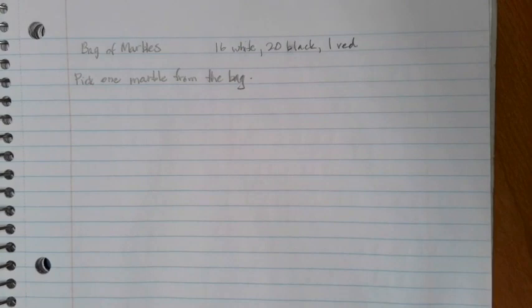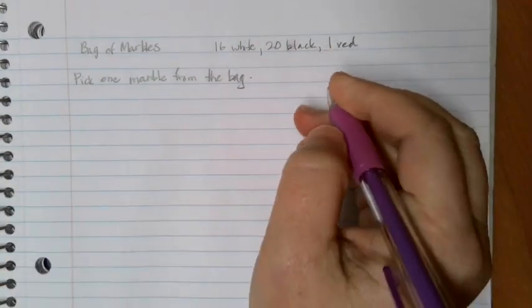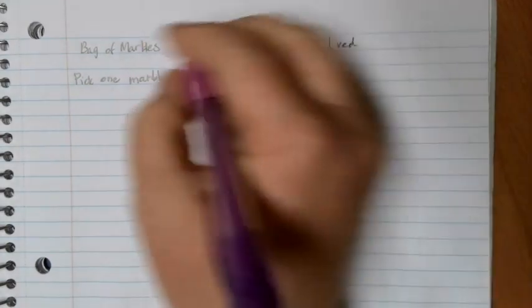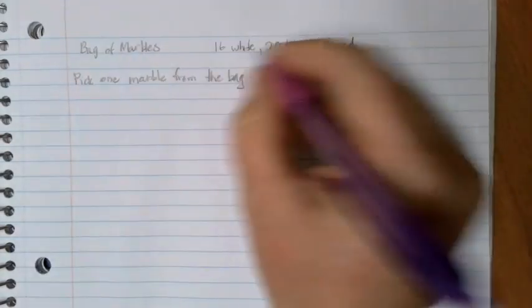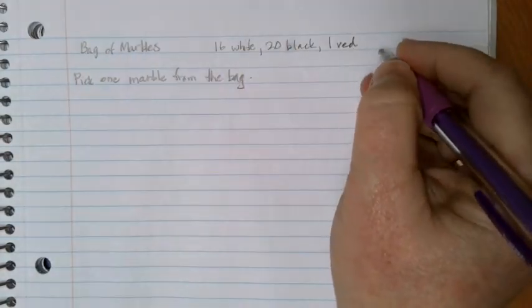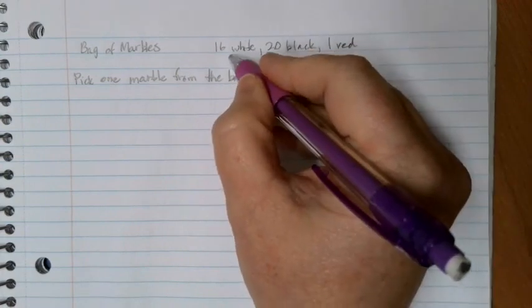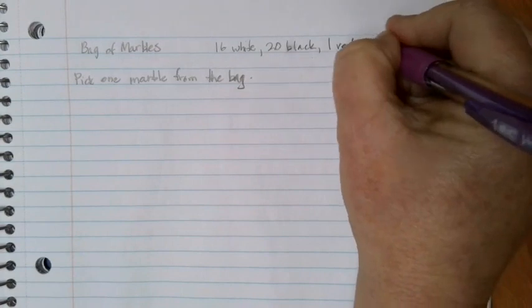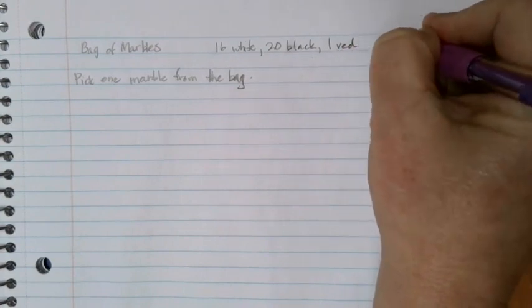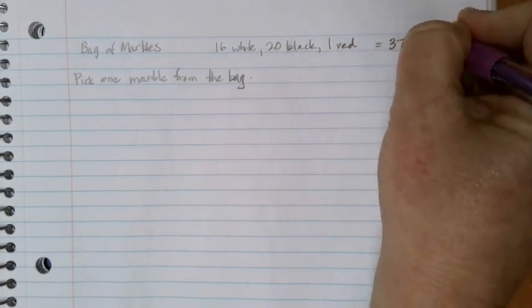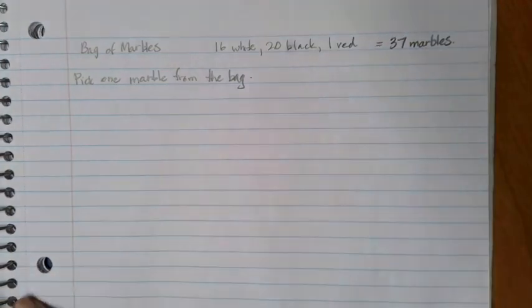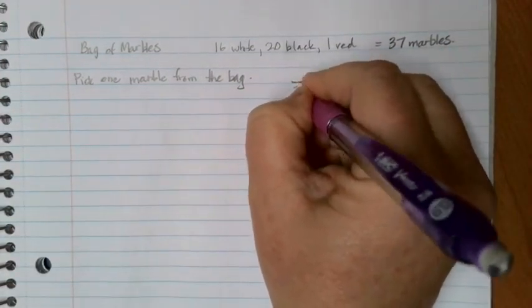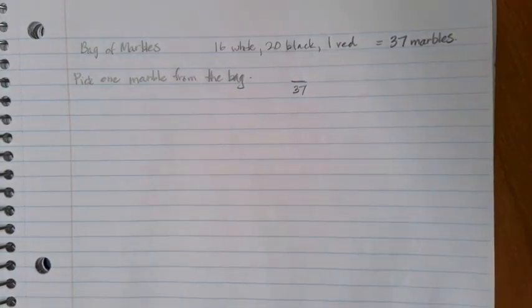So this is our situation. Now, if we're picking one marble from the bag, the first thing that we want to do is figure out what the total number of equally likely events are. There are 16 white events, 20 black events, and one red event. If we add those together, there's a total of 37 marbles in the bag. So 37 is going to be the total number of outcomes for that pick.